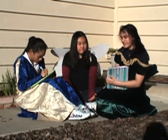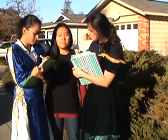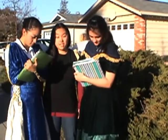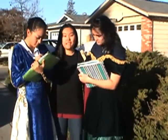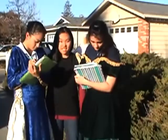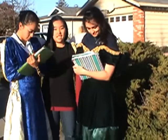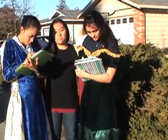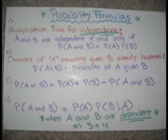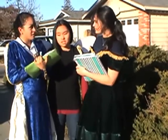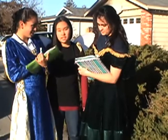Is there anything else we need to know? Well, there are a couple of formulas you'll need to know. The first one is the multiplication rule of independence, which is when A and B are independent if and only if P(A and B) = P(A) × P(B). The second is the conditional probability — the probability of A given B already happened, which is P(A|B) = P(A and B) / P(B). So given that B has already happened, what are the chances of A occurring?